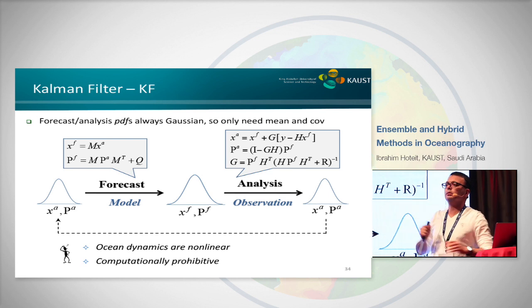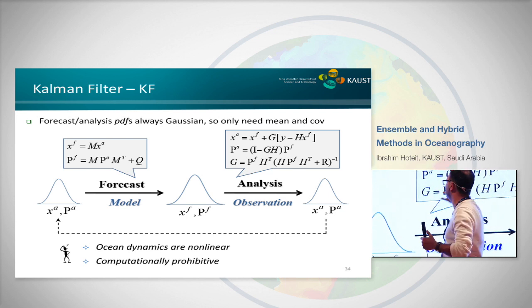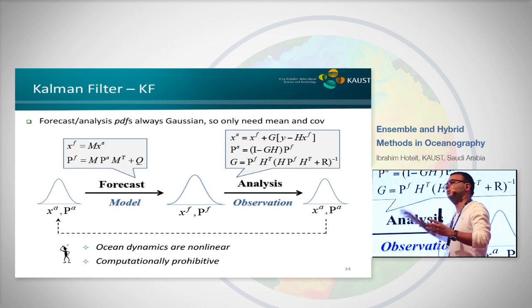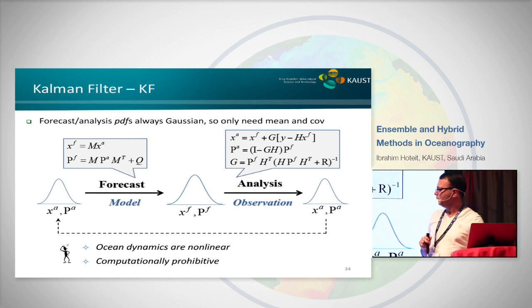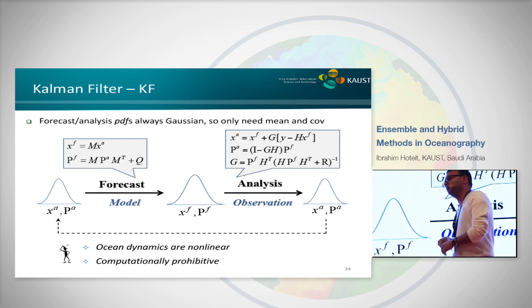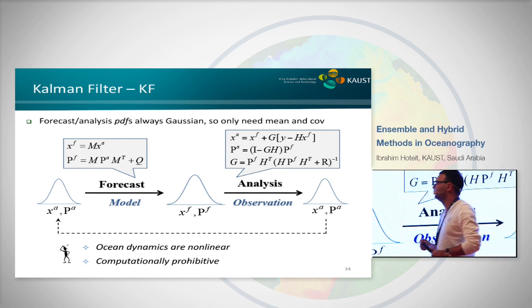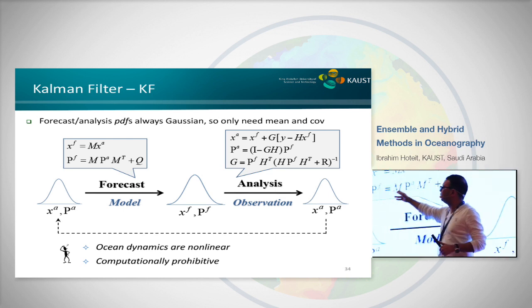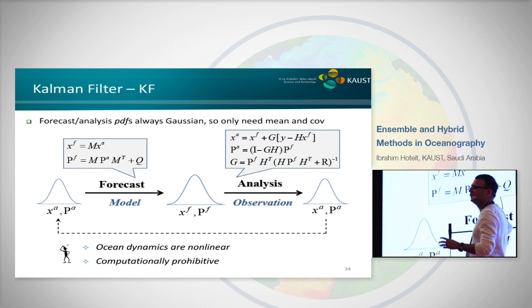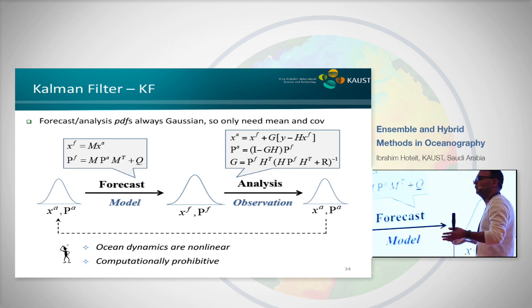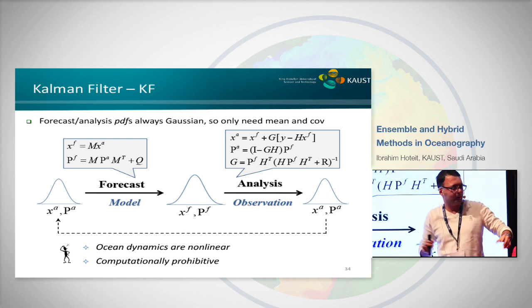So the cycle is: forecast, analysis, forecast, analysis. I forecast until I get the data; when I get the data, I update the distribution with Bayes, and forecast again. Why can't we implement this with the ocean? Two issues: the ocean dynamics are nonlinear, so I cannot apply this directly. Worse, I'm dealing with matrices — if the ocean model state is 10^8, these covariance matrices are 10^8 × 10^8. I cannot store or manipulate them. So I have to make some approximations.